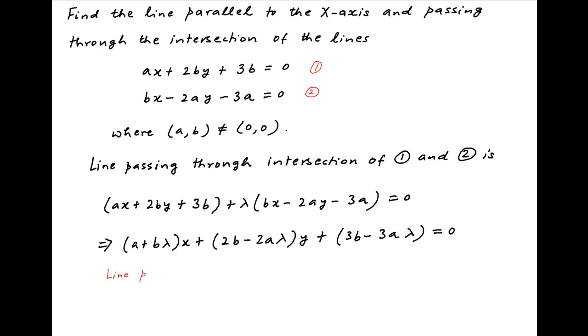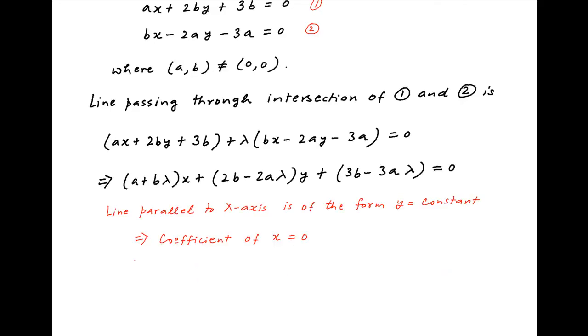Now, for this line to be parallel to the x-axis, it needs to be of the form y is equal to constant. In other words, the coefficient of x should be equal to 0, which implies that a plus b lambda should be equal to 0, which implies that lambda is equal to minus a upon b.